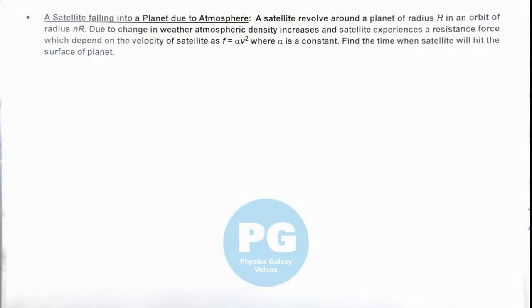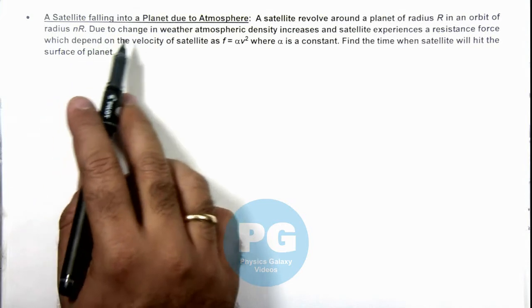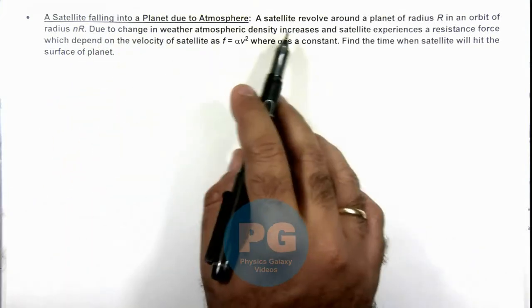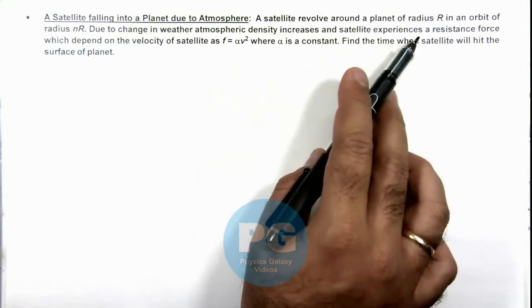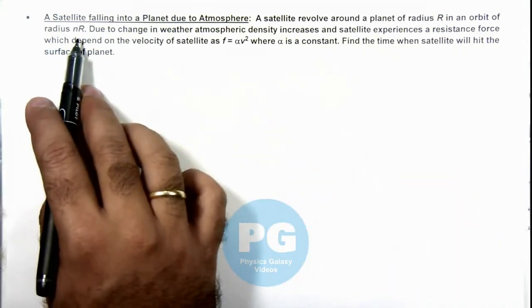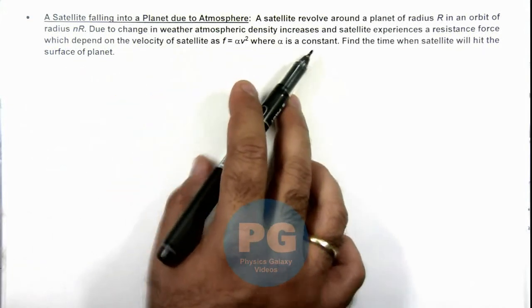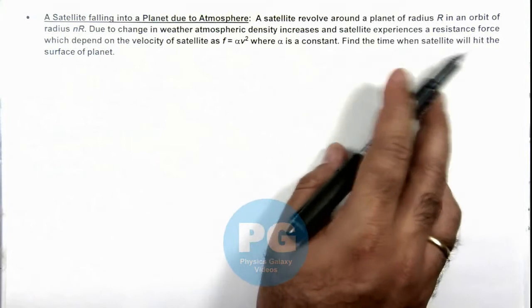In this illustration, we'll discuss a satellite falling into a planet due to atmosphere. Here we are given that a satellite revolves around a planet of radius R in an orbit of radius nR, and due to change in weather, atmospheric density increases and the satellite experiences a resistance force.